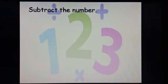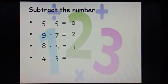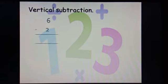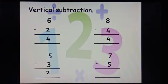Now, let us do some questions. Subtract the numbers. 5 minus 5 equals to 0. The next question is 9 minus 7 — yes, 9 minus 7 equals to 2. Next, 8 minus 5 is 3. 4 minus 3 equals to 1. 2 minus 2 — yes, it is 0. Now, we will do vertical subtraction. 6 minus 2 equals to 4. 8 minus 4 equals to 4. 5 minus 3 equals to 2. And 7 minus 5 equals to 2.